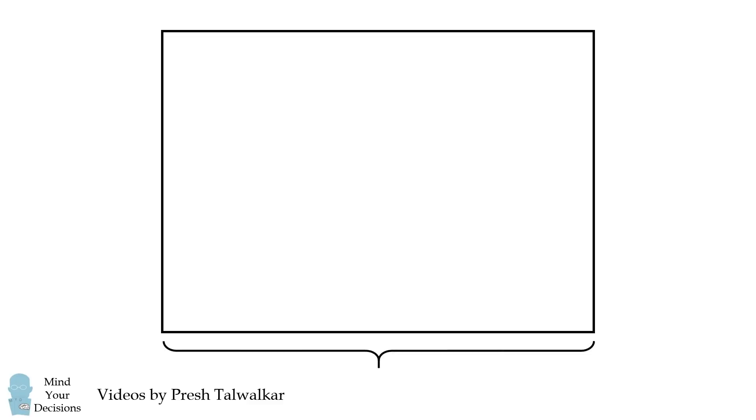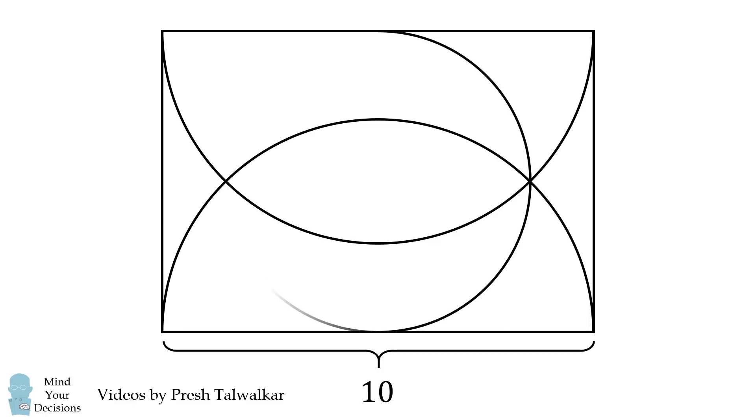A rectangle has a side length equal to 10. Construct two semicircles as shown, where each semicircle has a diameter equal to the side length of the rectangle. Inscribe a circle in the rectangle that's tangent to the two sides whose lengths are equal to 10, and goes through the two intersection points of the two semicircles.